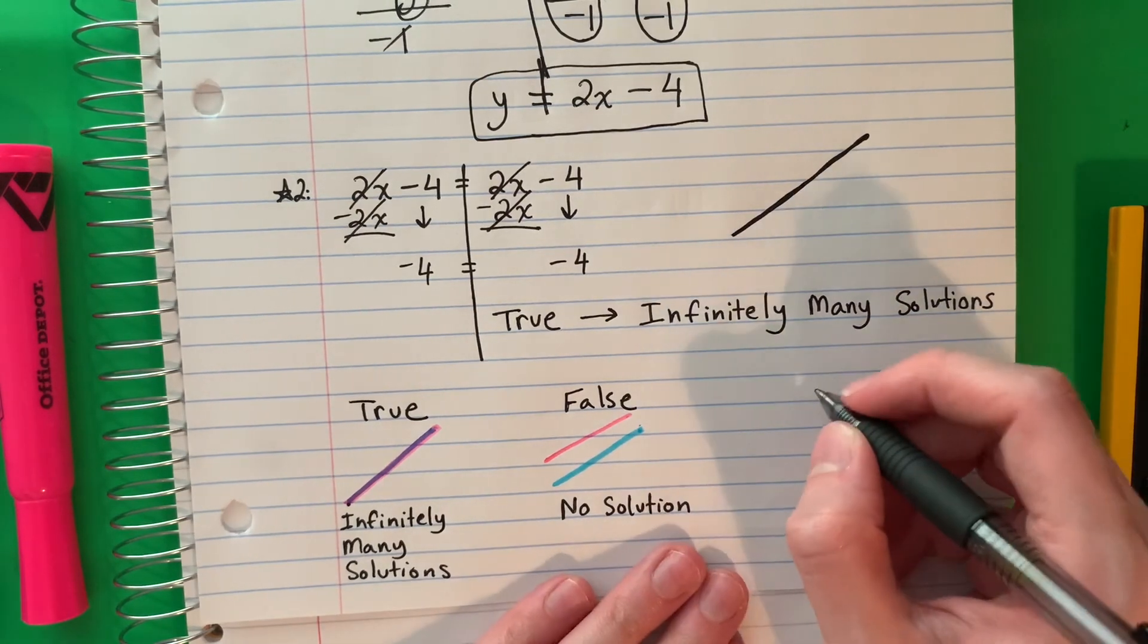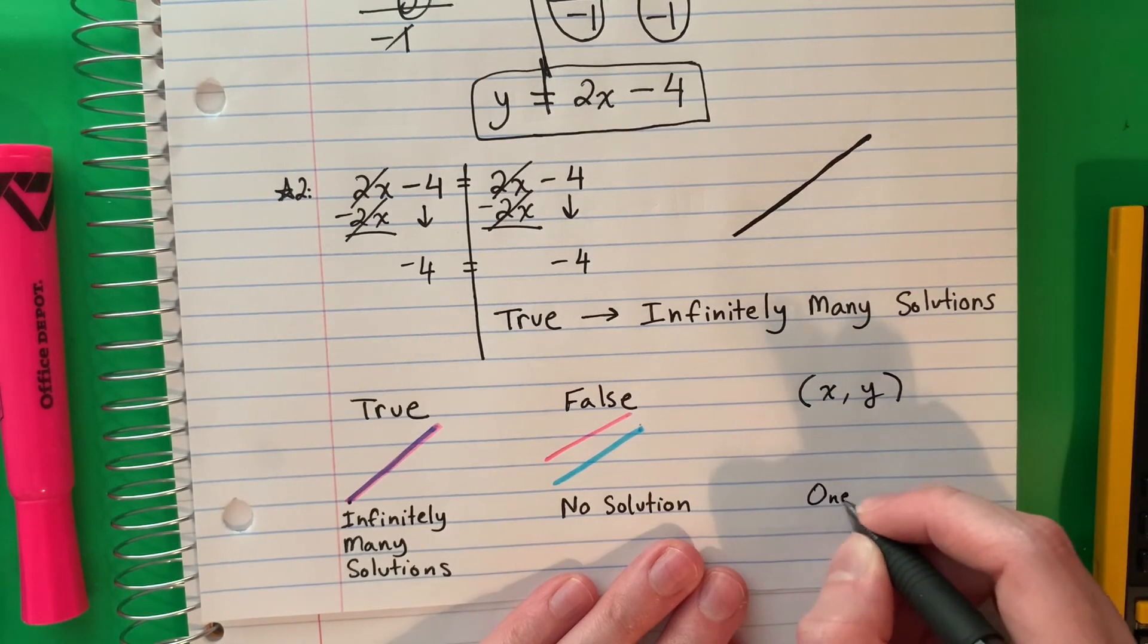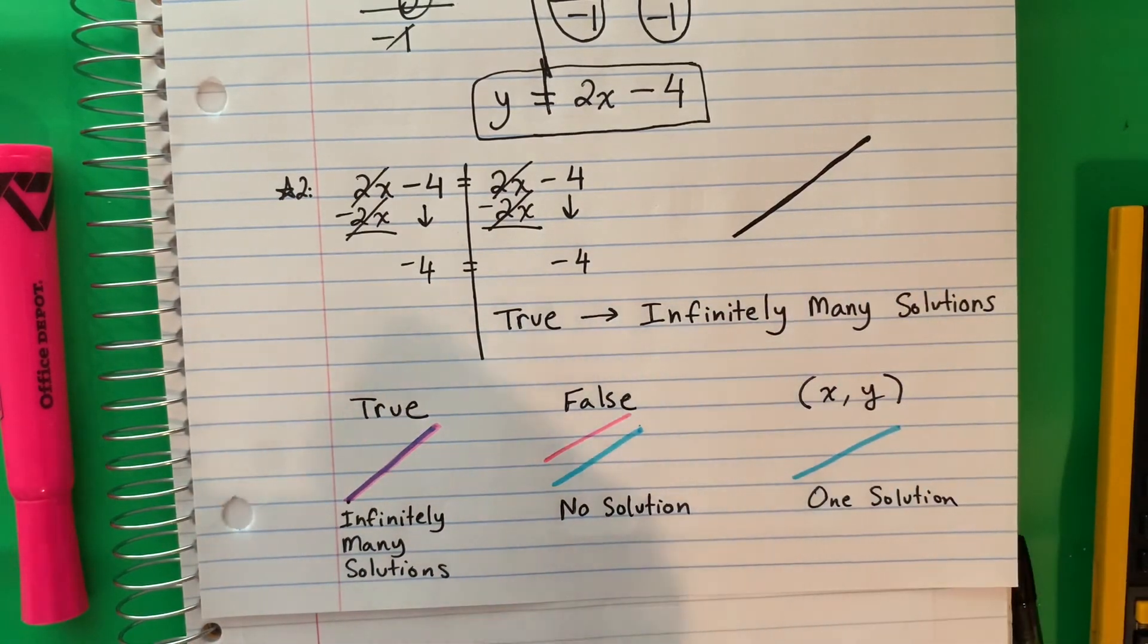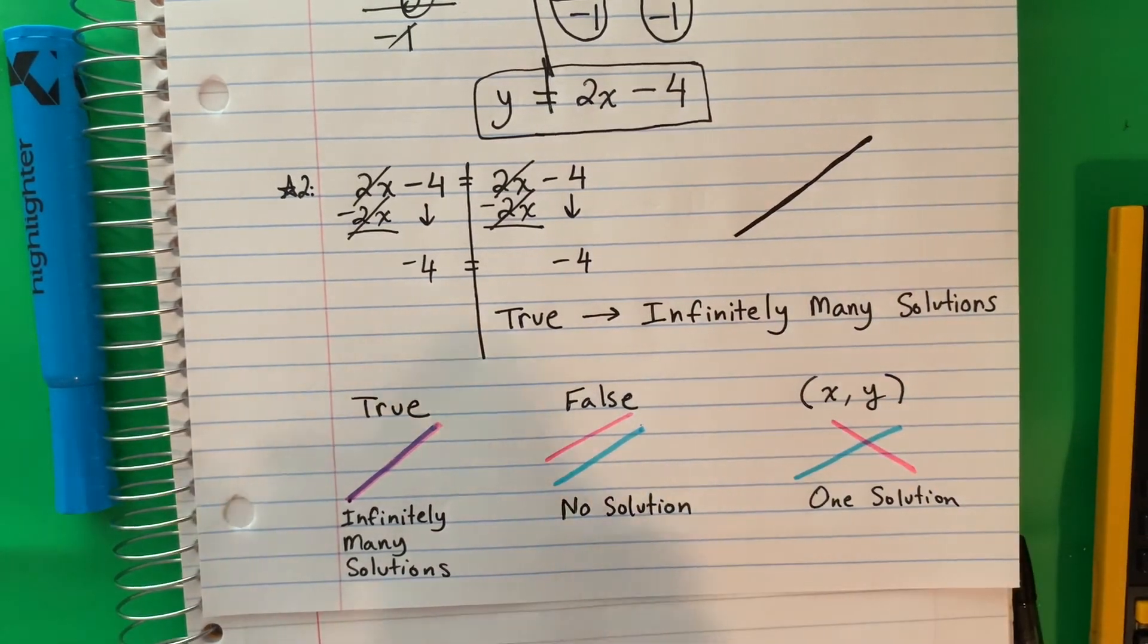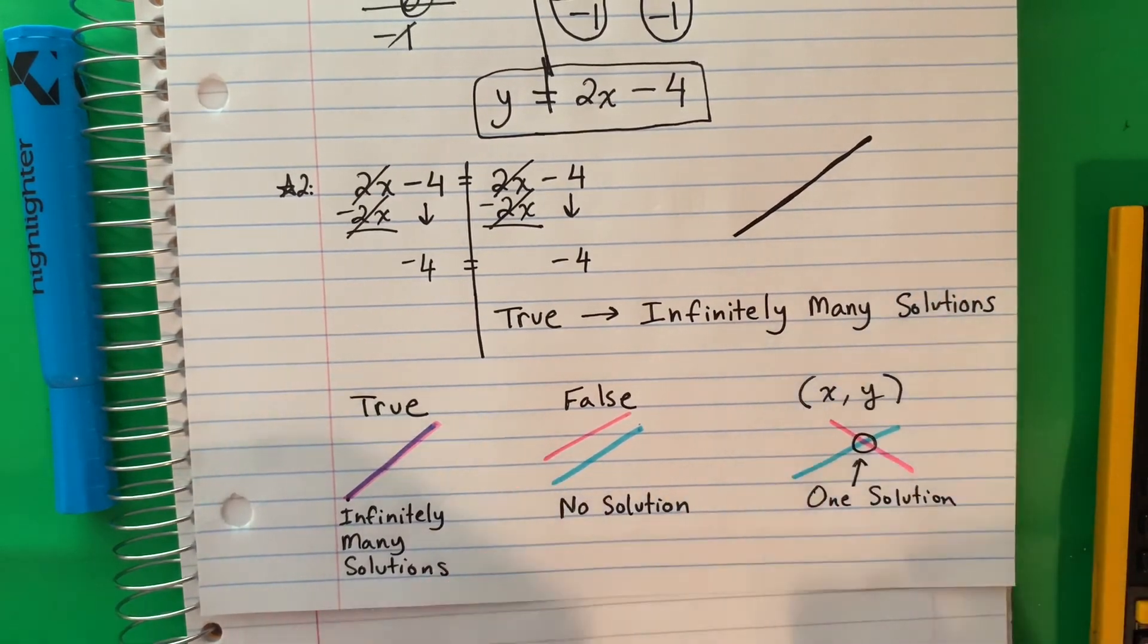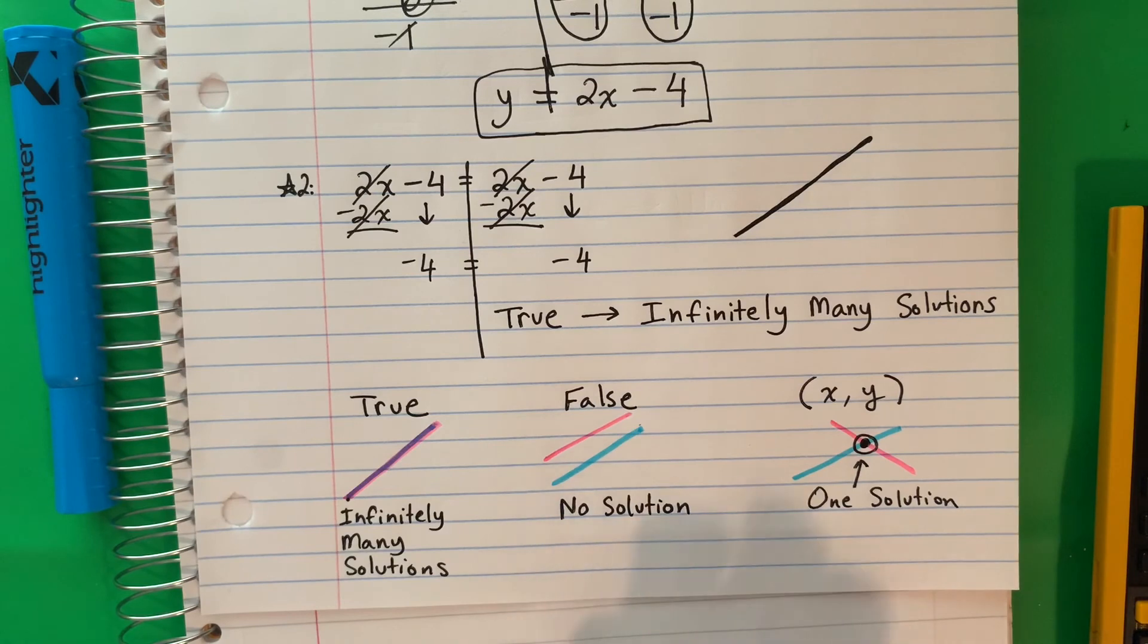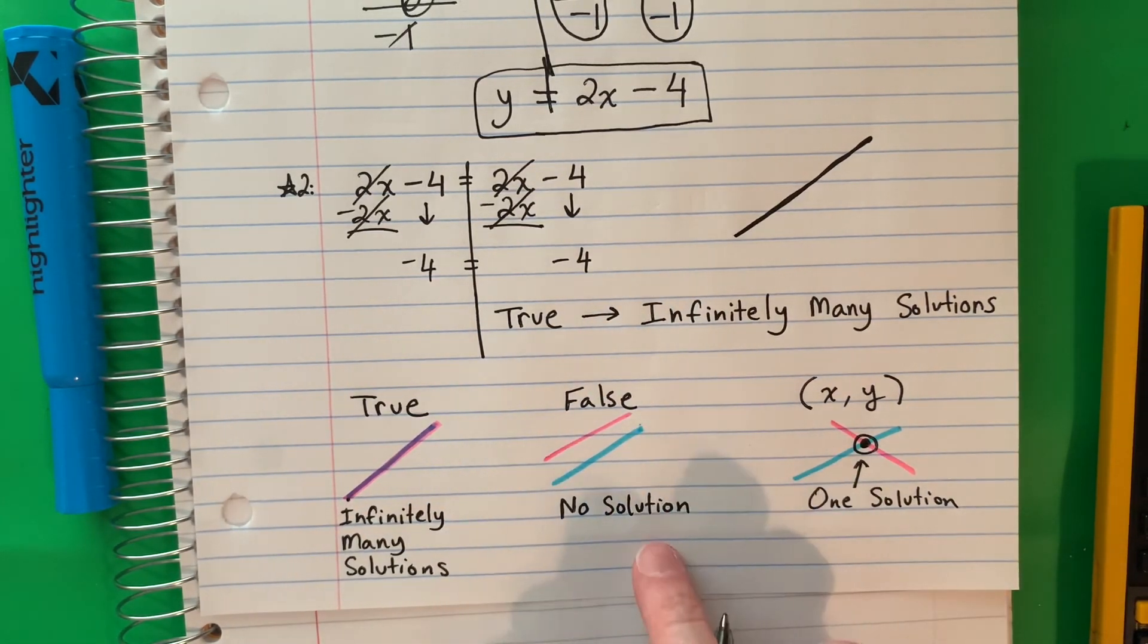If you have a point that is an answer, like in our previous video, that is one solution. You will have two lines and they will touch somewhere. This is where the solution is. So remember, solutions are where they touch. Here's one touch, one solution. Here, no touch, no solution.